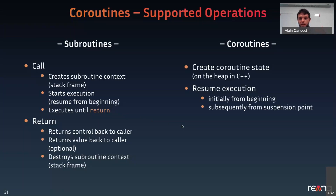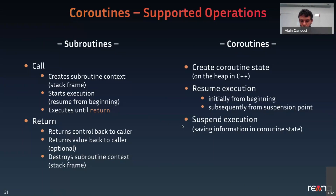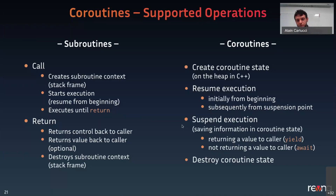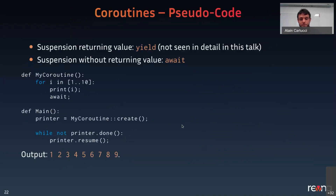When a coroutine suspends, all local variables, parameters, and local state are saved to the coroutine state. There are two ways suspension can happen: by returning a value to the caller with the yield operation, or without returning a value with the await operation. Yield is like return — control goes back to the caller along with a value — but you're not really returning, just yielding control. When you await, you give back control without a return value. Finally, you have the destroy operation, which can be invoked on the coroutine state after execution has ended.